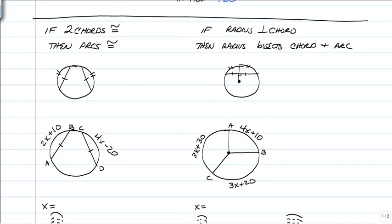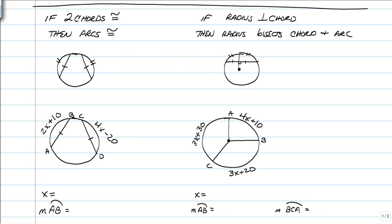Moving on. Two chords. If you have two different chords in a circle but they are congruent, then the arcs that are formed by those chords will also be congruent. And the other thing is if a radius is perpendicular to a chord, it's going to bisect the chord and the arc. So those are two different properties we're going to work with now.